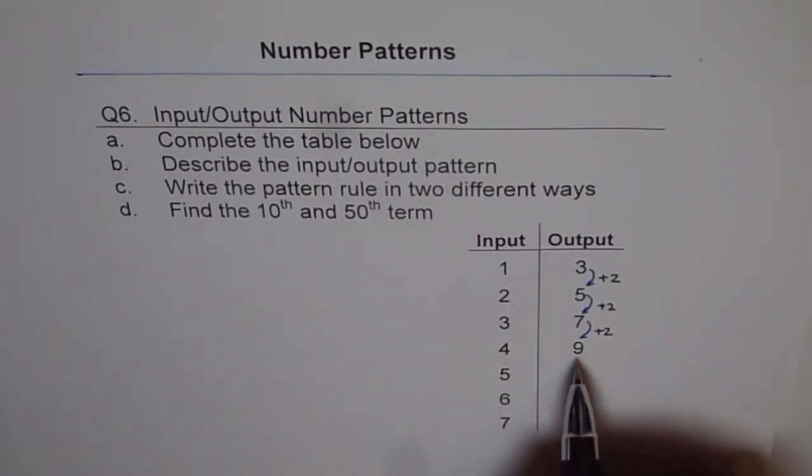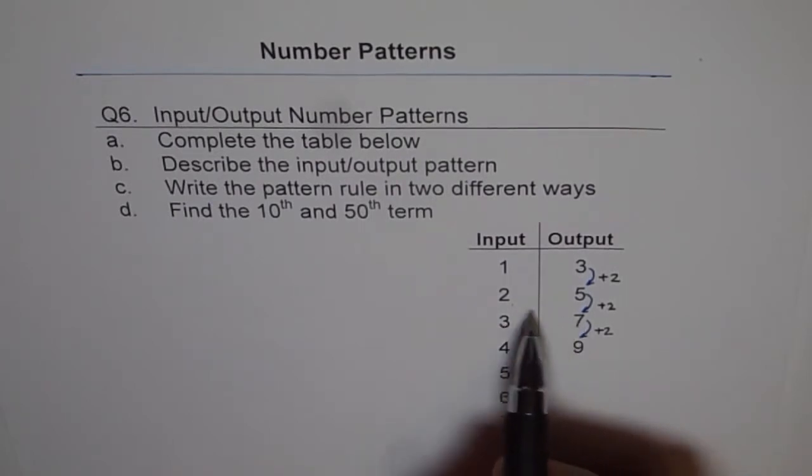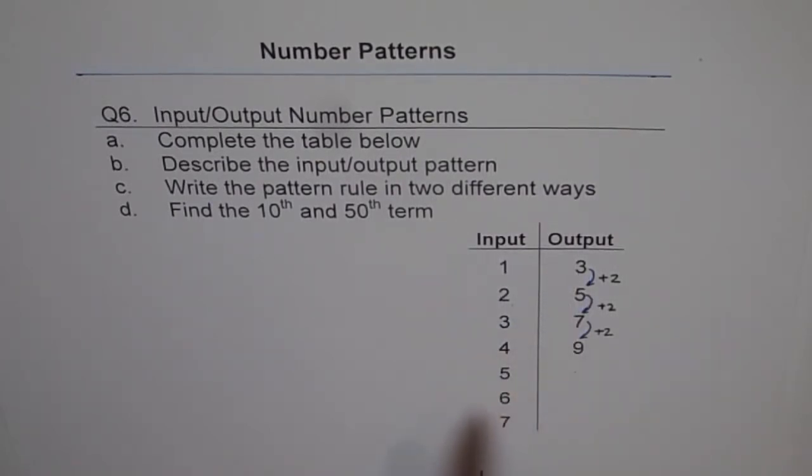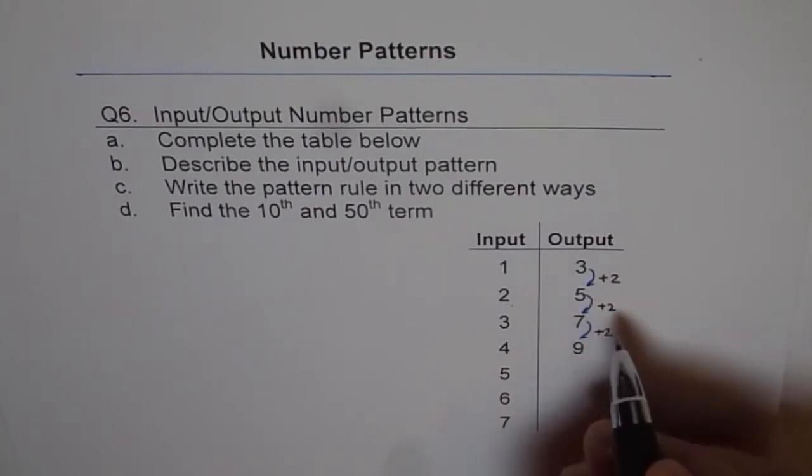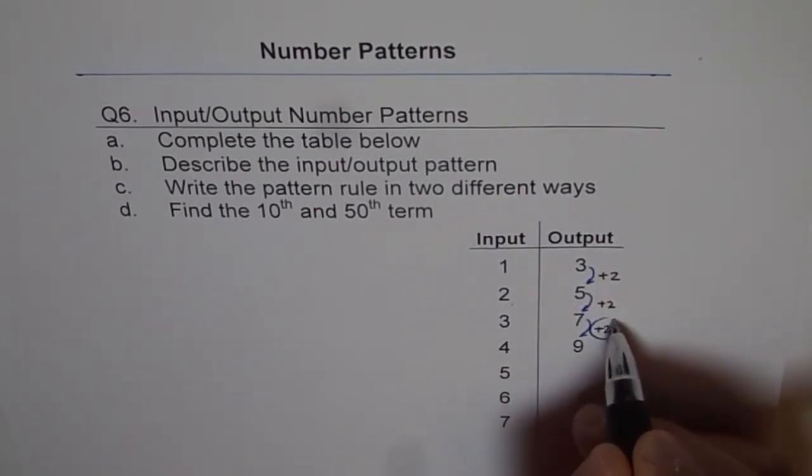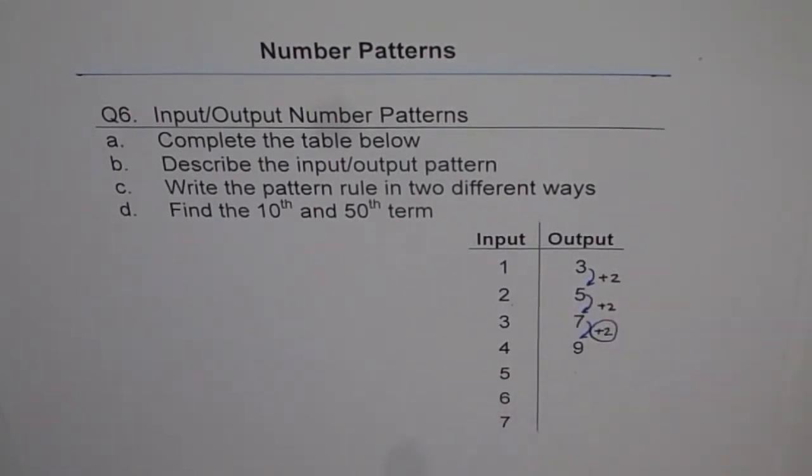But how to relate 3 to 7, 2 to 5, and 1 to 3? That is difficult. The key here is with the number 2 itself. I will show you how. That is the critical part of these number patterns.